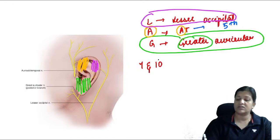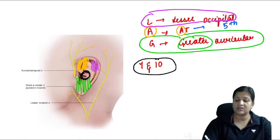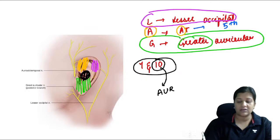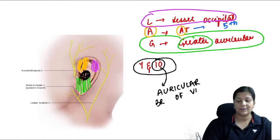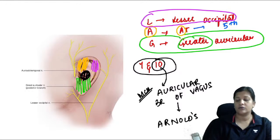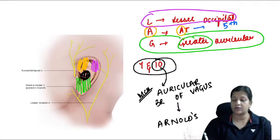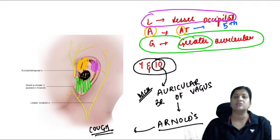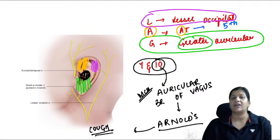Along with these, cranial nerves seven and ten also supply the ear — specifically the concha. The auricular branch of the vagus nerve is called Arnold's nerve, also called Alderman's nerve. This nerve mediates the cough reflex or syncopal reaction when the external canal is probed, such as during syringing or wax removal.